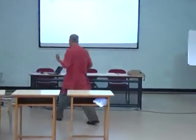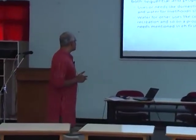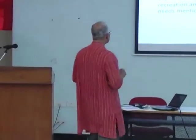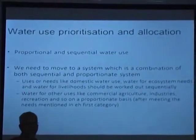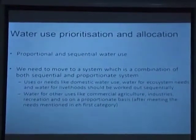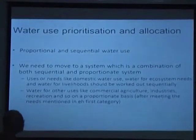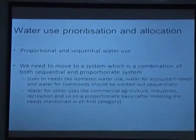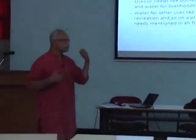What we are arguing is that we need to move to a system which is a combination of both sequential and proportionate approaches. Uses like domestic water, water for ecosystem needs, and water for livelihoods should be worked out sequentially — meaning water should not move from drinking water to other needs unless drinking water needs of people are met. Whatever other uses — like commercial agriculture, industries, recreation — should be allocated on a proportionate basis after meeting the needs in the first category. Unless we have this combination, saying drinking water has first priority does not make much sense in practice.